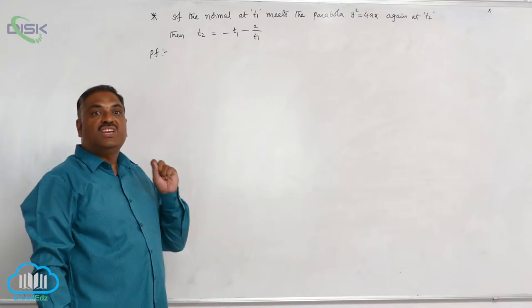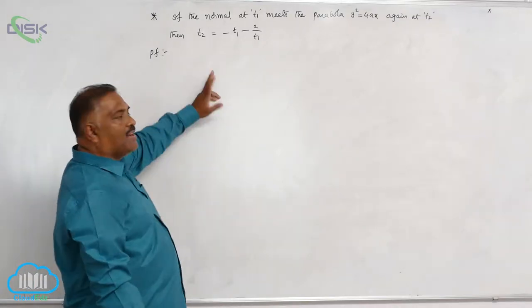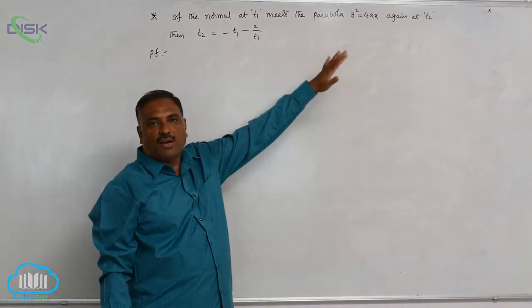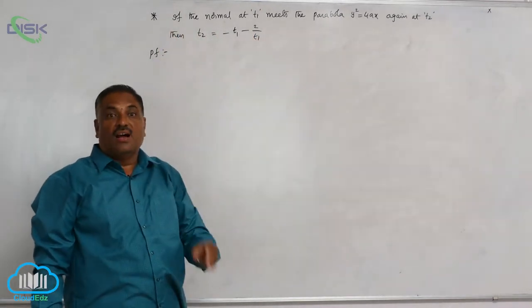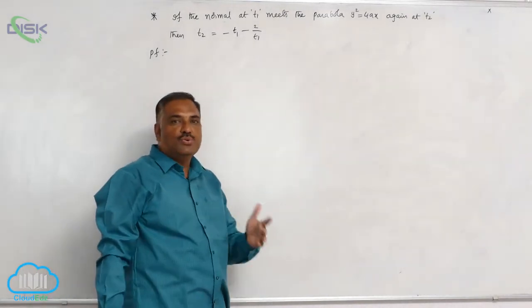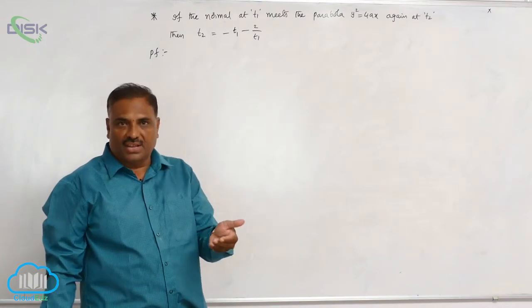We will discuss a very key result regarding the normal. If the normal at T1 meets the parabola y² = 4Ax again at the point T2, then we have to prove that T2 = -T1 - 2/T1.